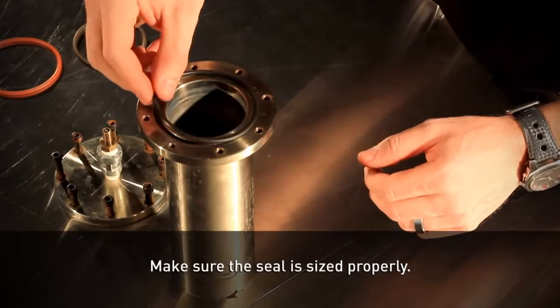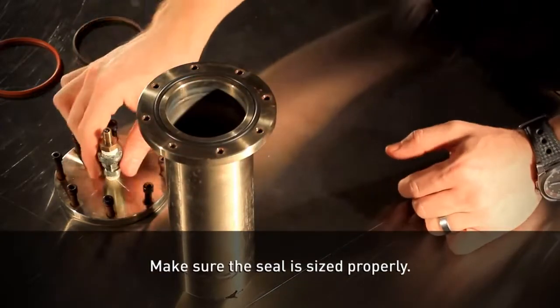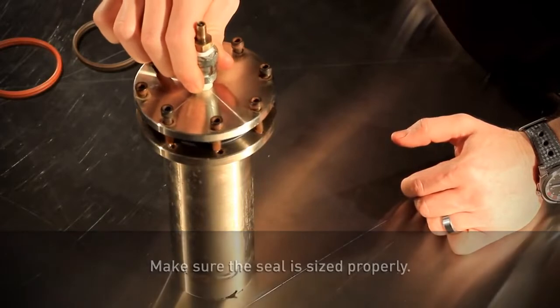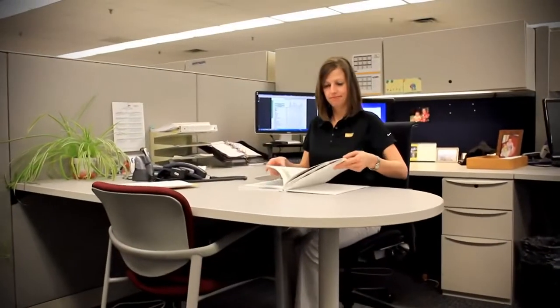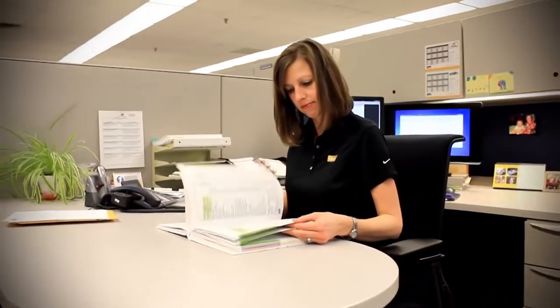The most important variable for installing an O-ring into a face seal is making sure that the seal is sized properly. Refer to the O-ring handbook or consult a Parker applications engineer for assistance in sizing O-rings to face seal glands.